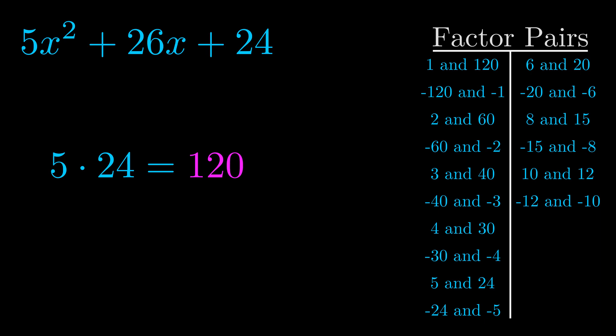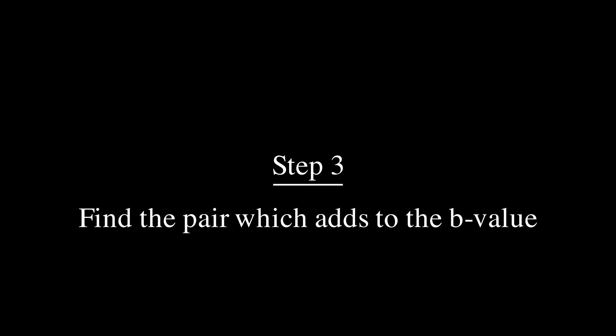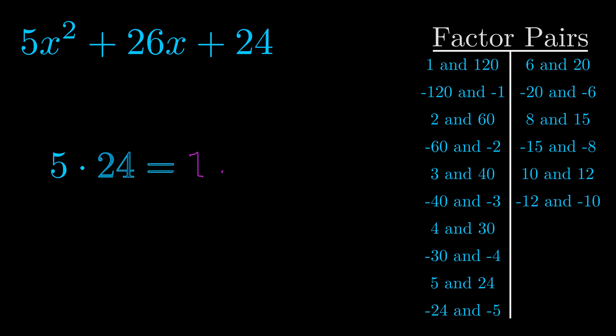Now once you have these factor pairs the goal is to find which of these pairs adds to the b value. The b value is the coefficient on the x term. That's the middle term, the one that we haven't done anything with yet. And really this is the only factor pair that we need.